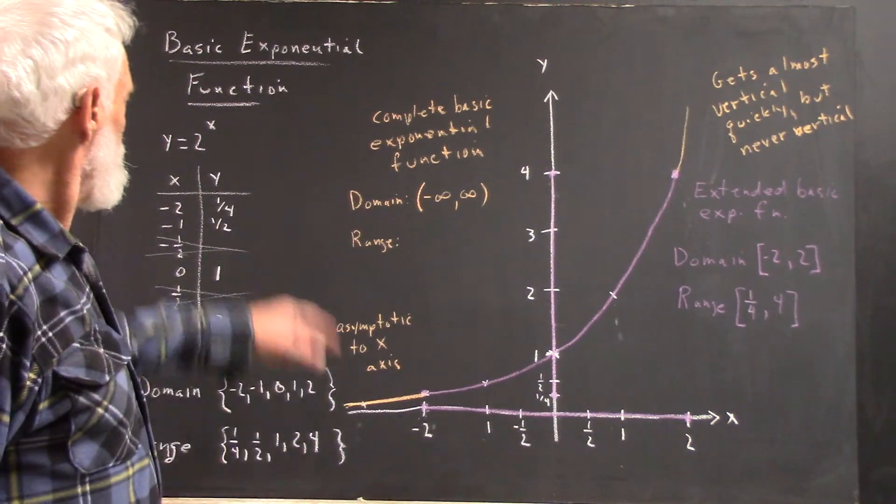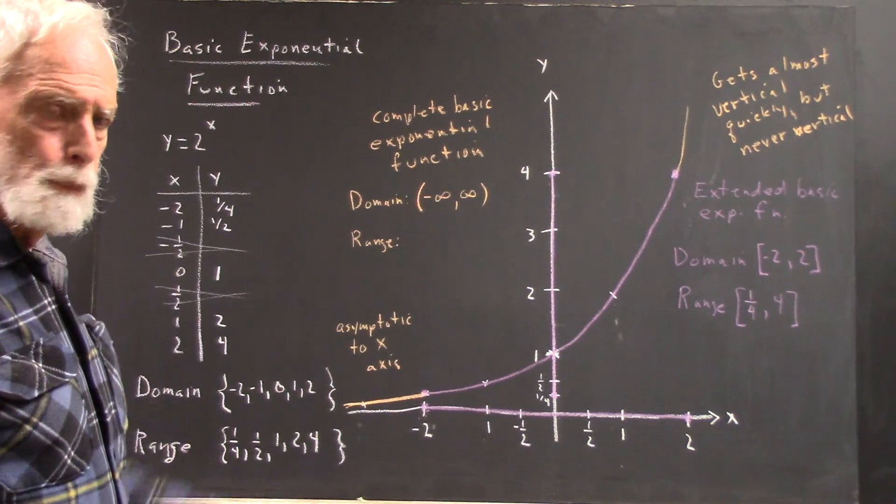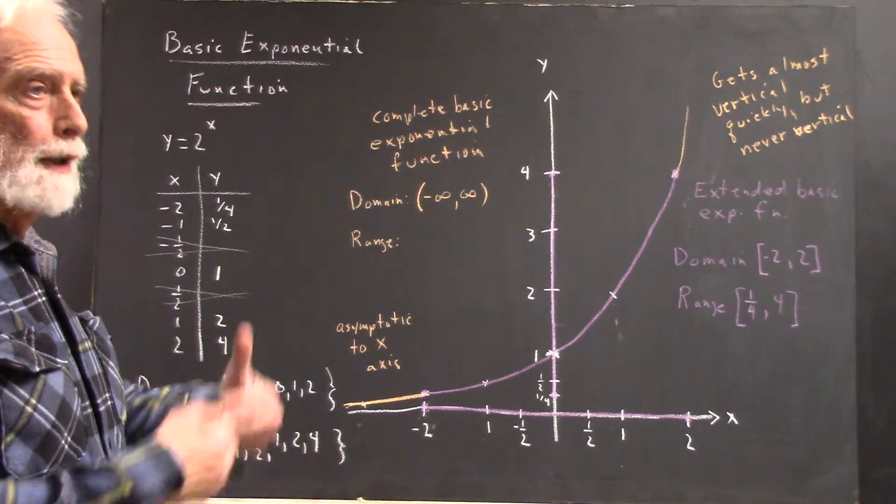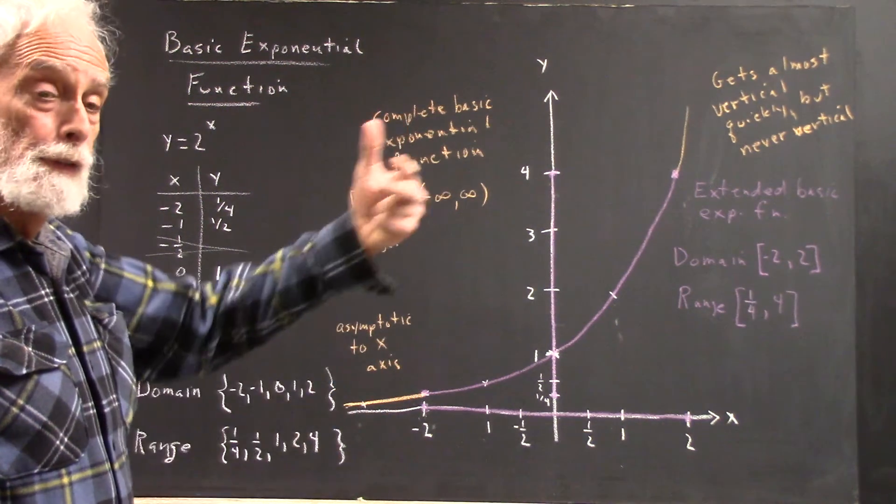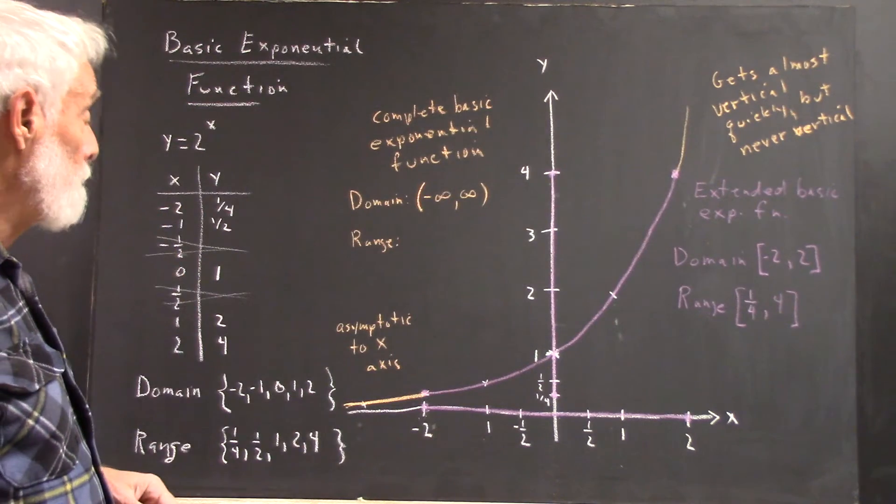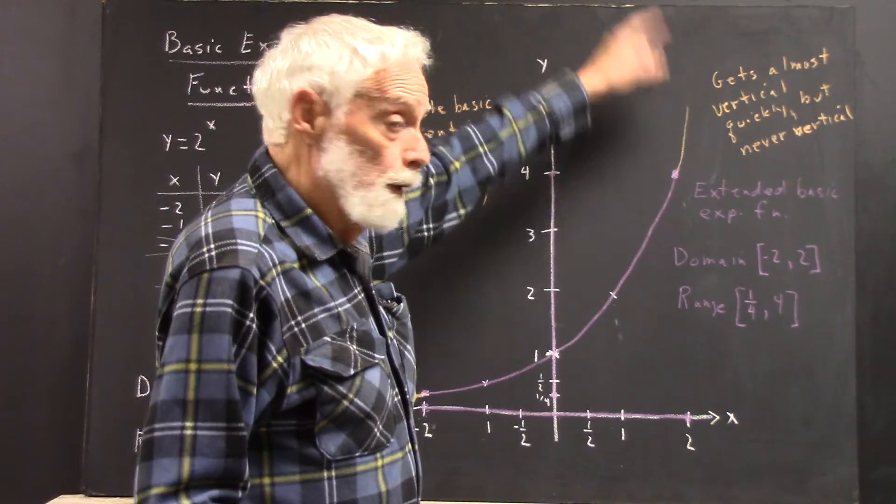So what? Well, the y can't ever be negative. 2 to any power is positive. So if you divide 1 by 2 to a power, it's got to be positive. It obviously gets very big.